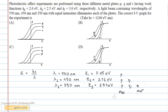For a given potential, plate P will have the maximum current and as the potential increases, the maximum current will get saturated.